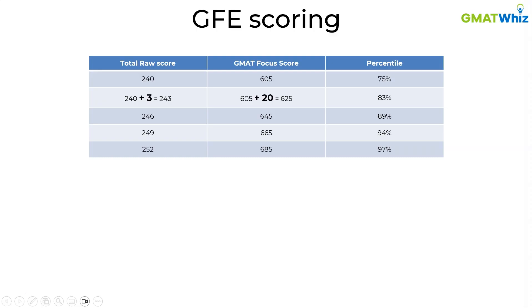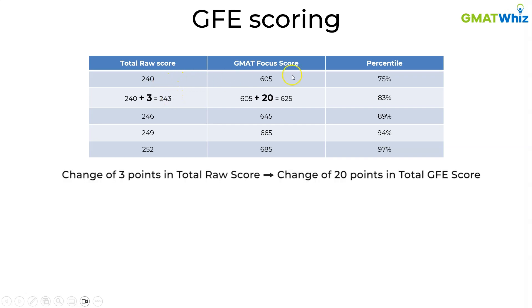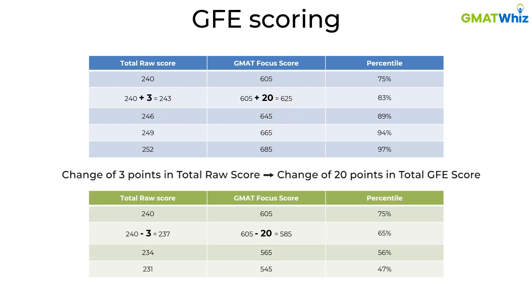Now how did we arrive at this? There's a very logical way of doing it. You can set in your mind as a baseline that a raw score of 214 — the combined total of quant, verbal, and DI — translates to 605 on the total GMAT Focus score. If you increase your raw score by three points, your total score increases by 20 points. So from 240 to 243 means an increase to 625 in the total score. Any change of three points is equivalent to a change of 20 points in the total score.